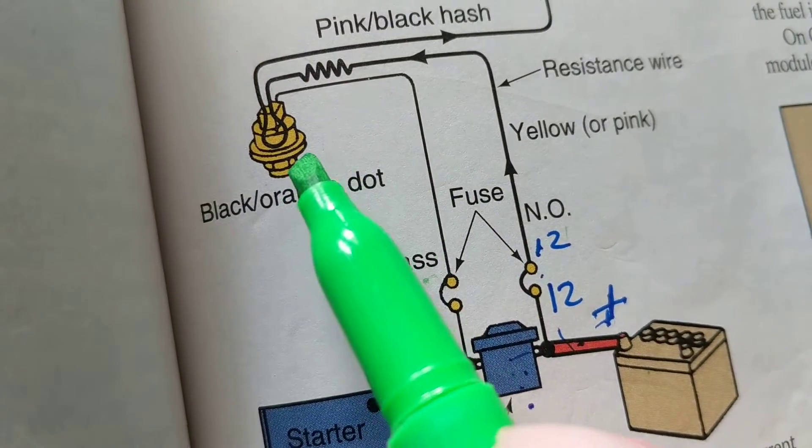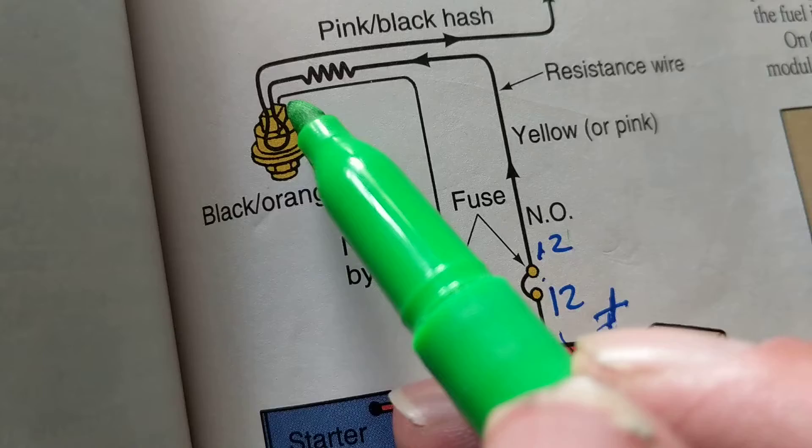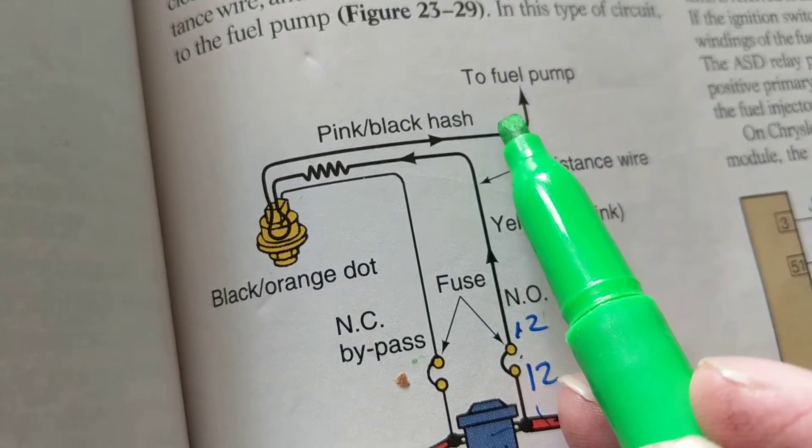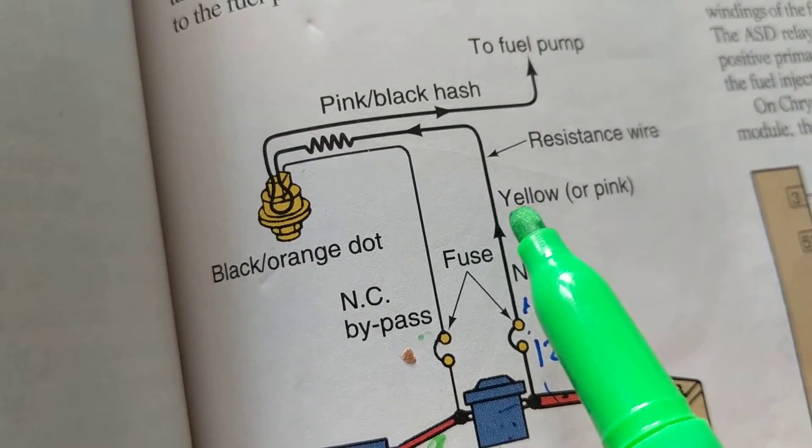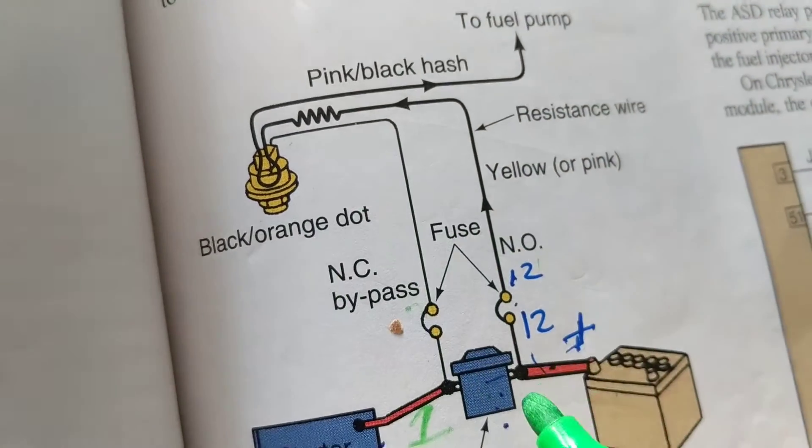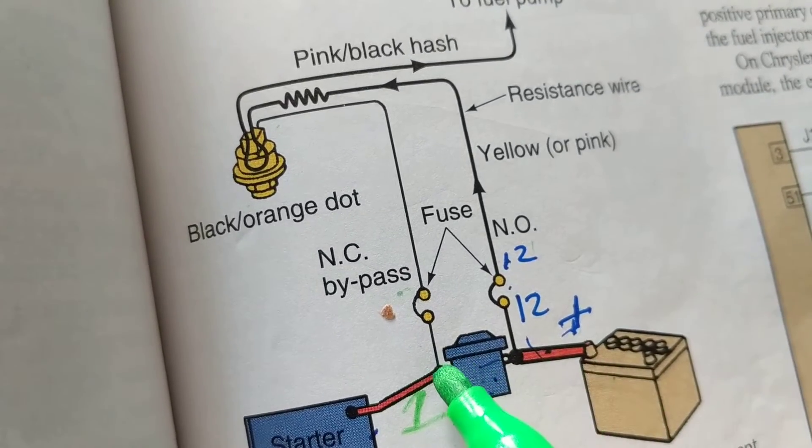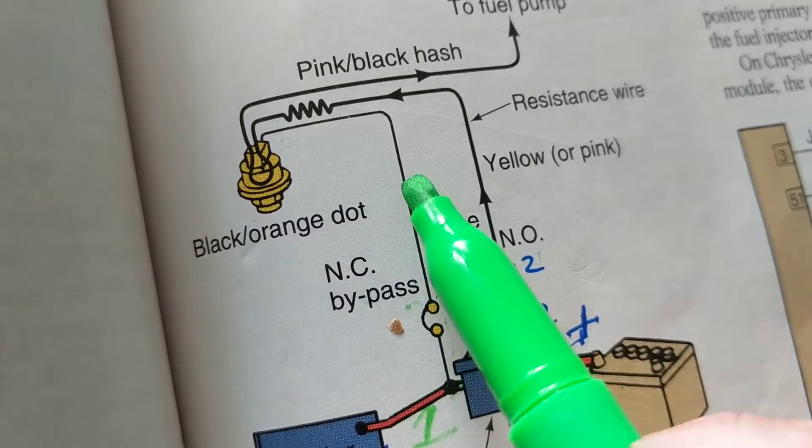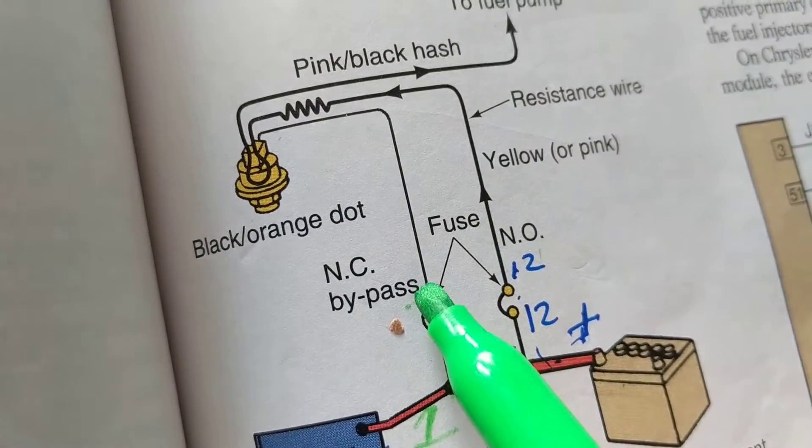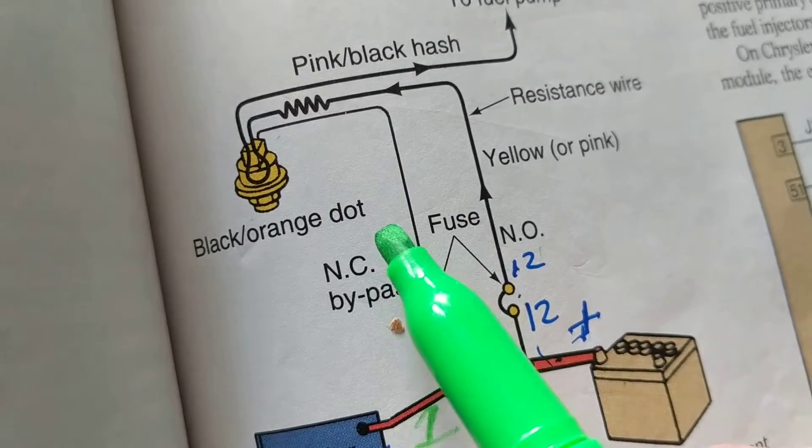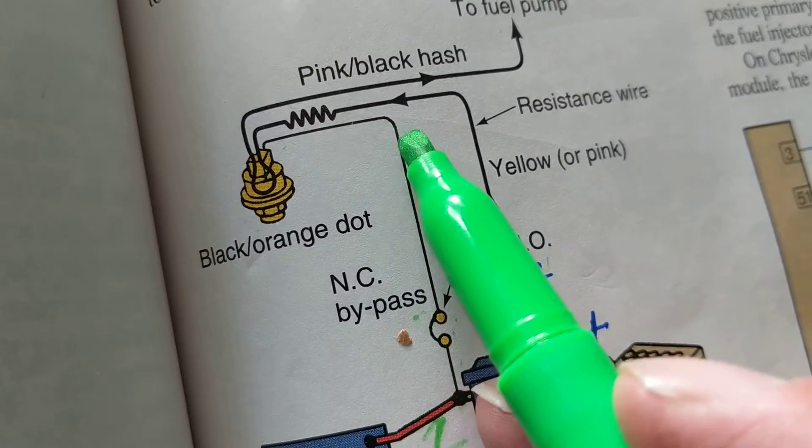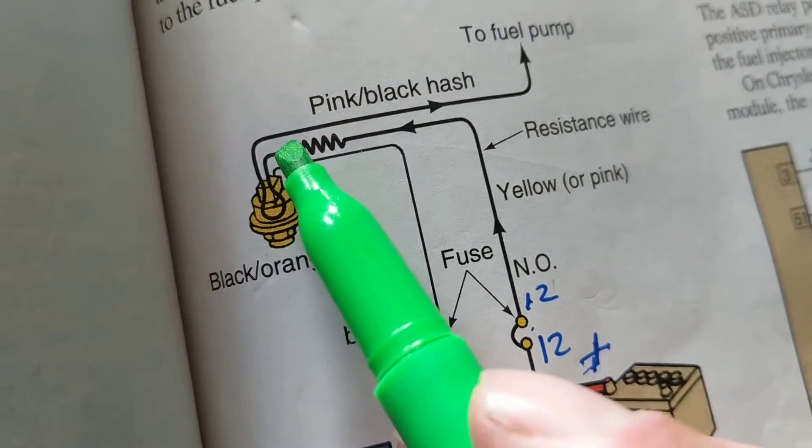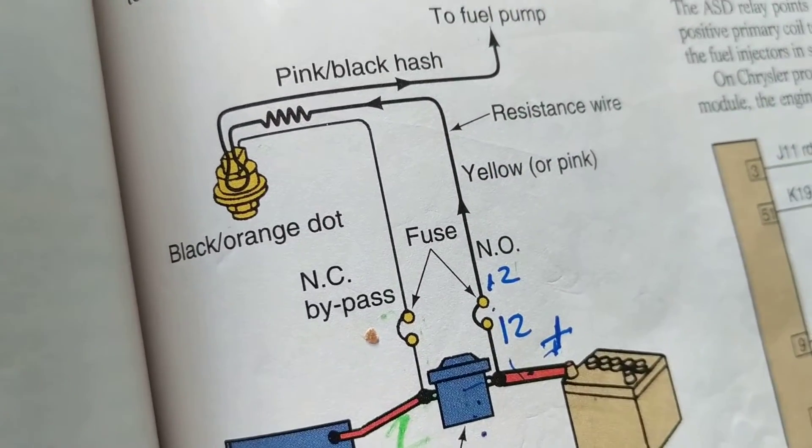So in this path over here, we have something called normally closed bypass. This normally closed bypass path is one path that you can reach to the fuel pump. So as this is happening, current is flowing through the starter relay, through the fuse, through a bypass which is normally closed. Normally closed means it's closed. So therefore current will flow here through the oil pressure switch to the fuel pump.